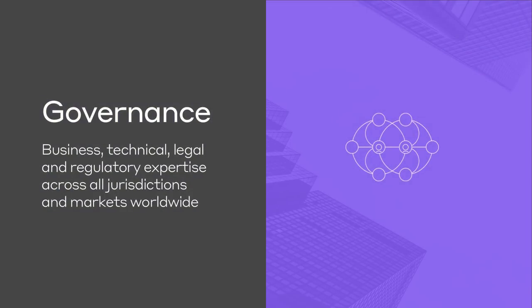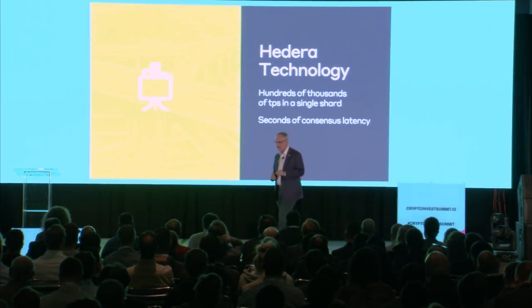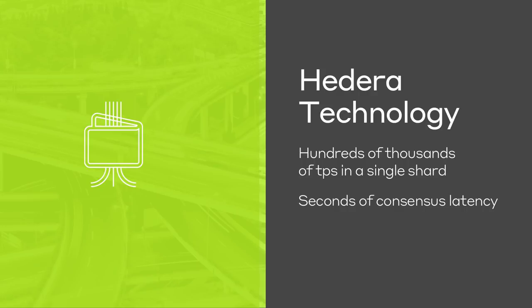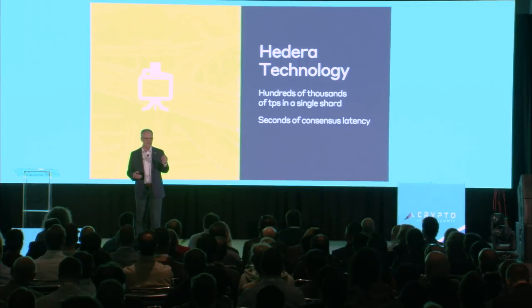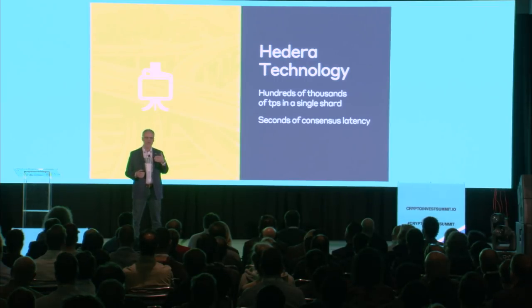Finally, governance: if we can solve all of those problems, what is the appropriate governance model that will cause mainstream markets to adopt and trust the platform? Hedera, using the Hashgraph algorithm, has performance measured in the hundreds of thousands of transactions per second, and it achieves seconds of consensus latency. Within seconds the community comes to agreement on the order of transactions — and it's not probabilistic, it's with 100% certainty that the order will never change again in the future, backed by a math proof you can take to a court of law.